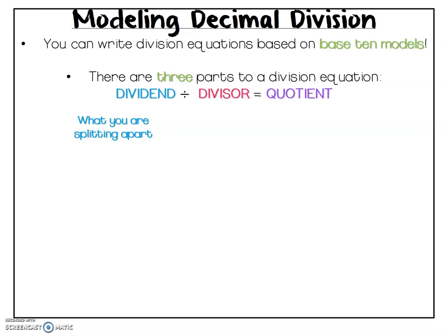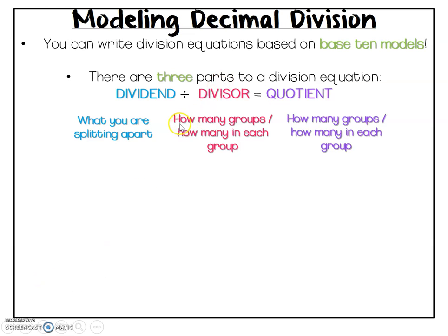The dividend is what we're splitting apart and the divisor could tell us one of two things depending on the story problem. It might tell us how many groups there are or it might tell us how many items are in each group. Which means that depending on what the divisor told us, the quotient would tell us the opposite. In other words, if the divisor told us how many groups there were, the quotient would tell us how many items were in each group. And if the divisor told us how many items were in each group, the quotient would tell us how many full groups we have.